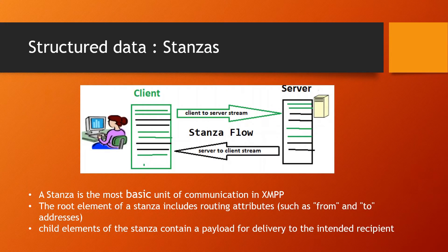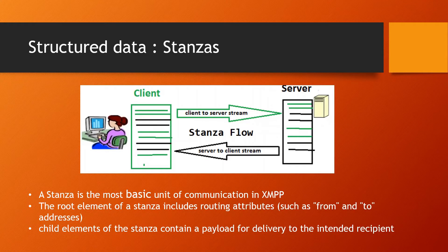Now let's look at stanzas. A stanza is the most basic unit of communication in XMPP — the smallest thing you can send over the XMPP network. It is an XML tag, and XMPP uses XML under the hood. The stanza has a bunch of attributes inside, which are XML attributes, and we use some of those attributes to route stanzas. The most common attributes are the 'from' attribute, saying where the stanza is coming from, and the 'to' attribute, denoting where the stanza is going. Inside the stanza we can have other tags identifying what kind of information we're trying to send to the destination.